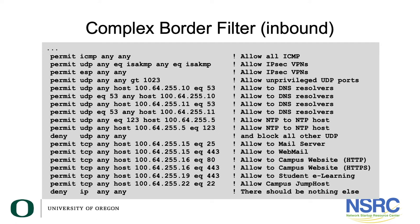Note we also have a line that allows access to the campus jump host for admin access for the network administration. There should be nothing else, so the final line — deny IP any any — will block all other incoming traffic. If you're curious to see what's being blocked, you can put on a log as an option, and then the router logs will be filled with all the other traffic that gets blocked.